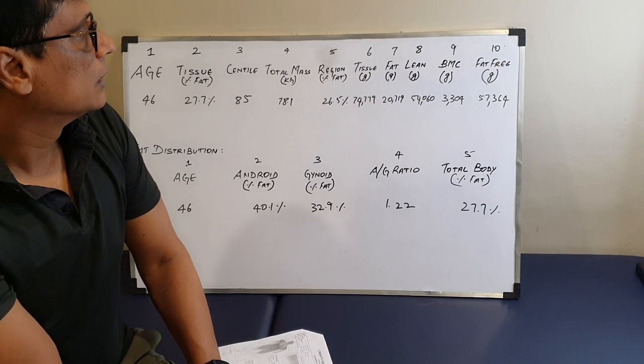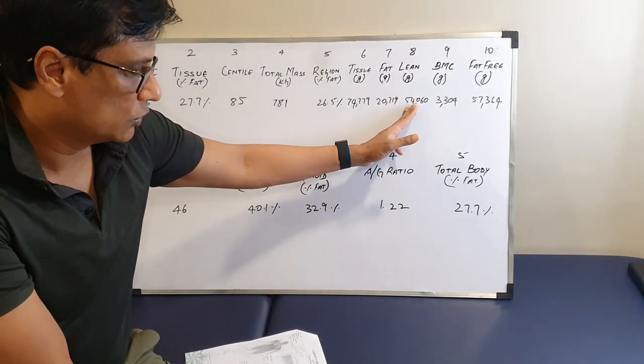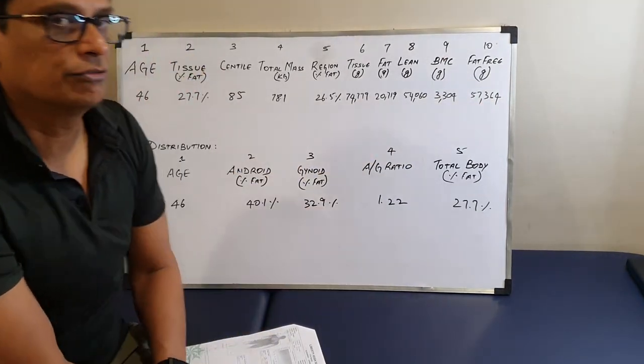So what is fat-free mass? Fat-free mass here is a combination of your lean body mass, which is your muscle, and bone mineral content.